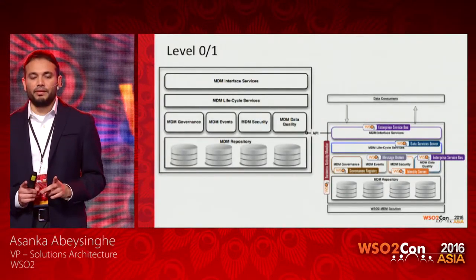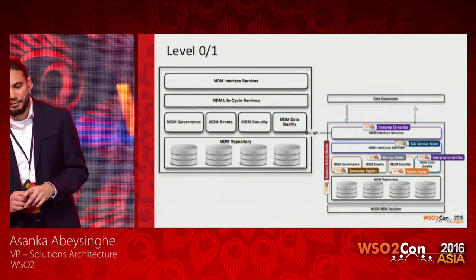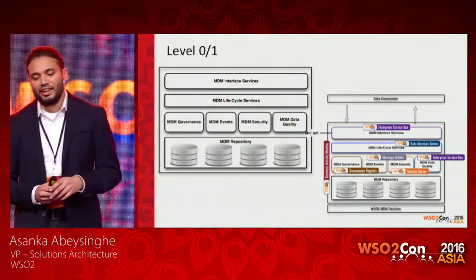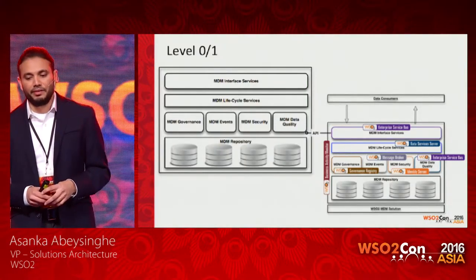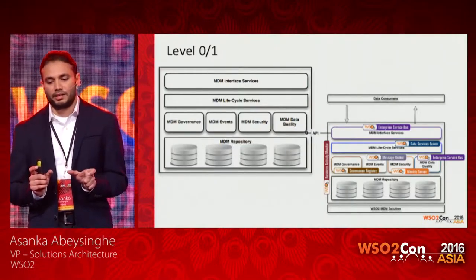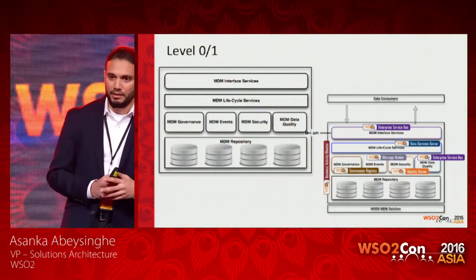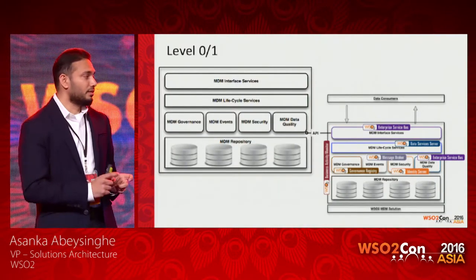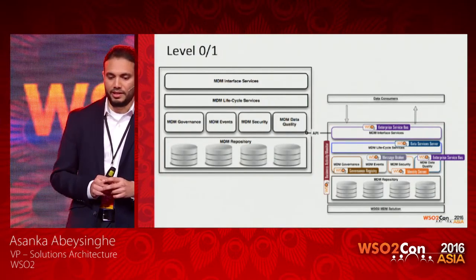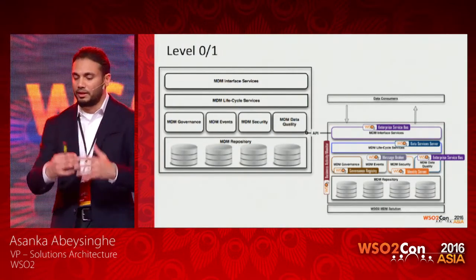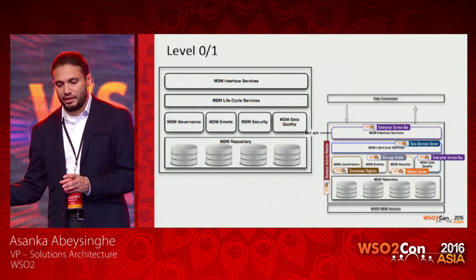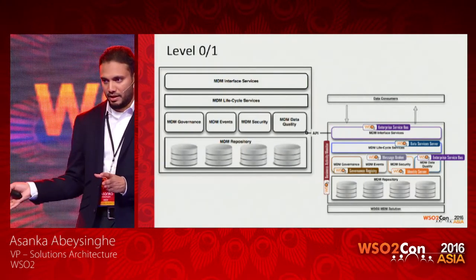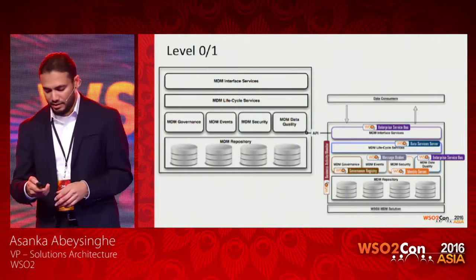This is an example of level zero and level one architecture. If you look at the diagram on your right-hand side, it describes a level zero architecture — this is a reference architecture for a pattern called MDM, which stands for Master Data Management. You can find different architecture layers and components on top of the data layer. On the other side you see the product mapping, which is the level one architecture — how you implement using these products.